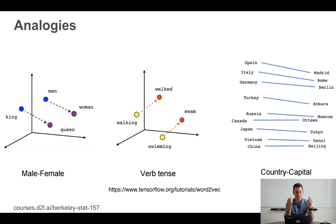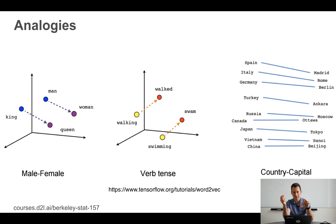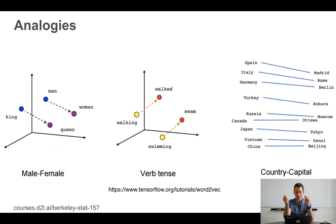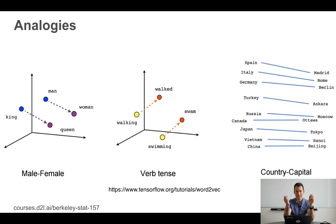With word embeddings you can play games like: man is to woman as king is to queen, or walking turns into walked, or swimming to swam, or country-capital relationships like Spain is to Madrid as Italy is to Rome. If you have that, you can try to do math like Italy minus Rome plus Madrid equals Spain — at least that's the idea.